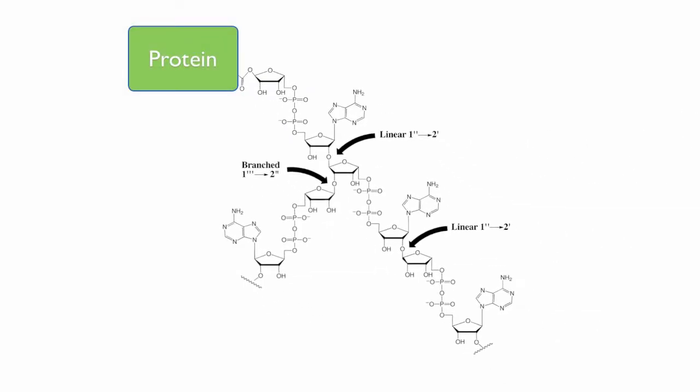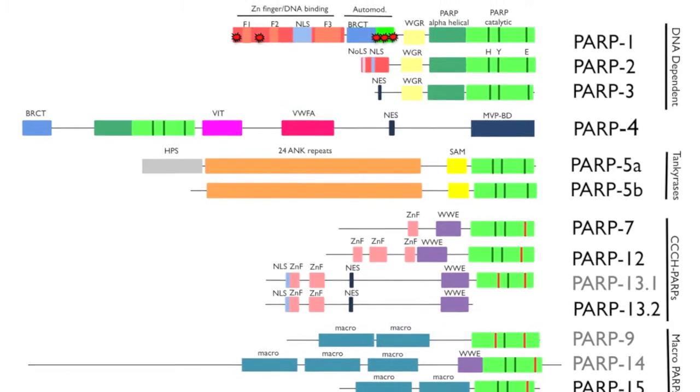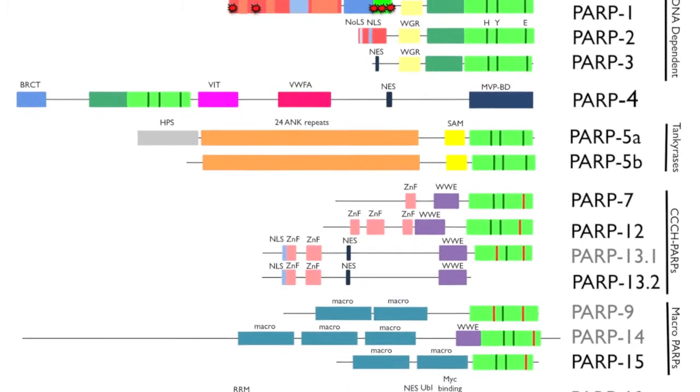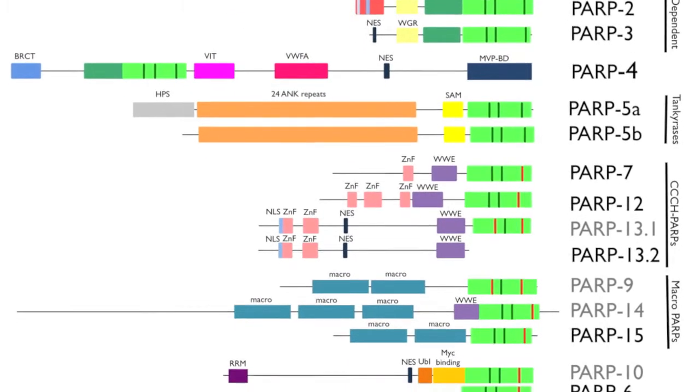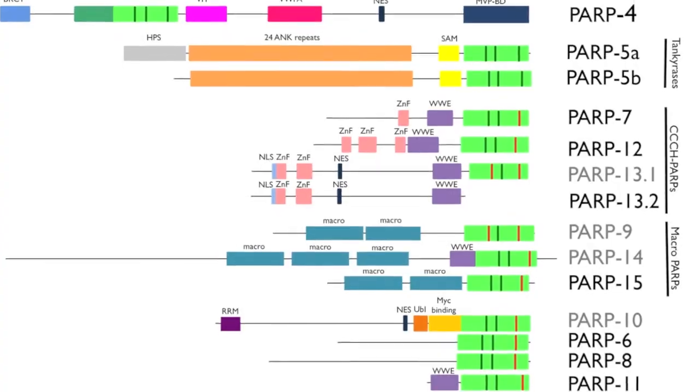PARP proteins, or poly ADP ribose polymerases, synthesize a protein modification called ADP ribose onto target proteins. Humans have 17 PARP proteins, and when I started my lab the first thing we decided to do was try to understand what the uncharacterized PARPs do in cells.